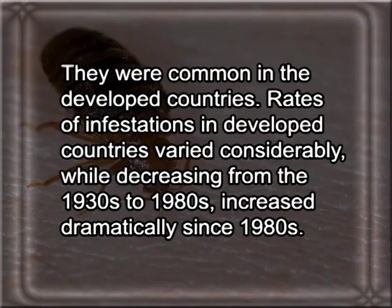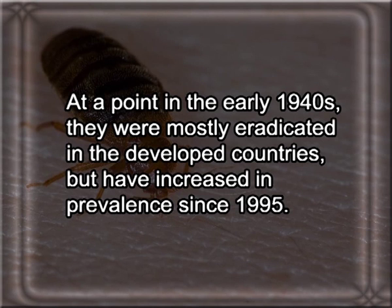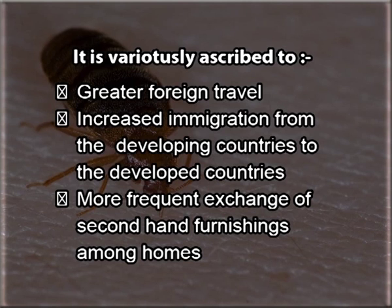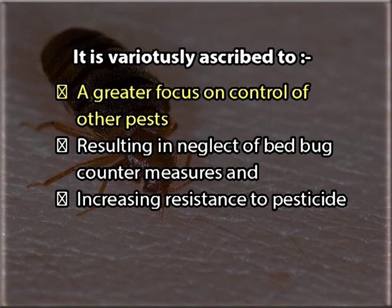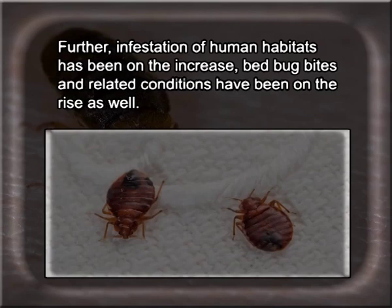Bed bugs were common in the developed countries. Rates of infestation in developed countries varied considerably, decreasing from the 1930s to 1980s, then increased dramatically since the 1980s. At a point in the early 1940s they were mostly eradicated in developed countries, but have increased in prevalence since 1995. The exact cause of this resurgence remains unclear. However, it is variously ascribed to greater foreign travel, increased immigration from developing to developed countries, more frequent exchange of second-hand furnishings, a greater focus on control of other pests resulting in neglect of bed bug countermeasures, and increasing resistance to pesticides. Infestation of human habitats and bed bug bites have been on the rise.